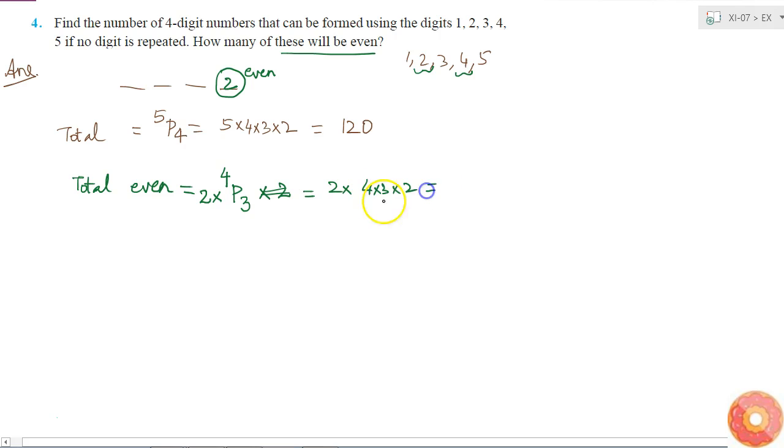Which is equal to... 4 × 3 is 12, 12 × 2 is 24, 24 × 2 is 48. So 48 four-digit numbers can be formed using 1, 2, 3, 4, and 5 which are even.